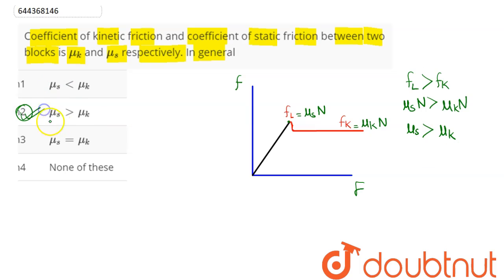That is here, option number two. μ_s is in general greater than μ_k. That is, coefficient of static friction is found to be greater than coefficient of kinetic friction experimentally. Hence, option two is the correct answer.